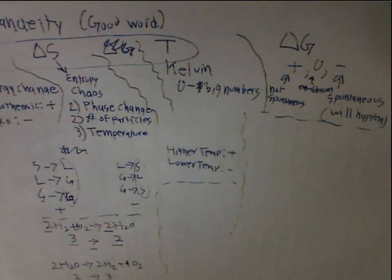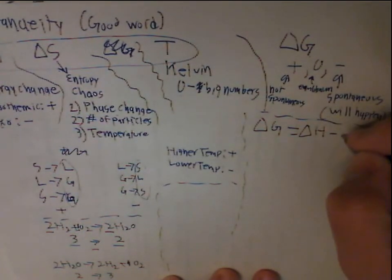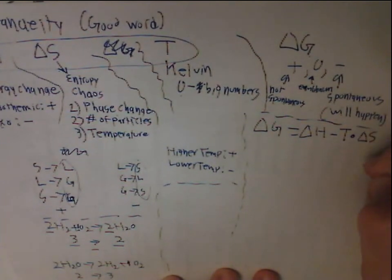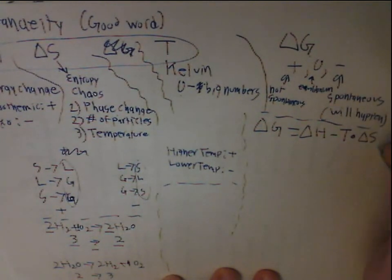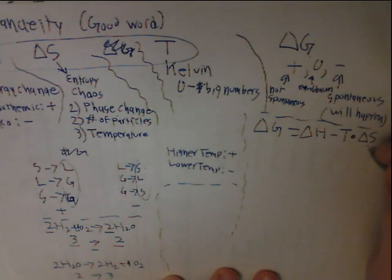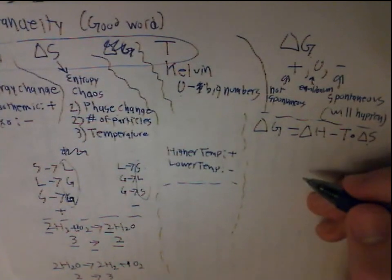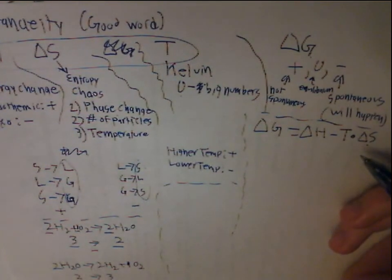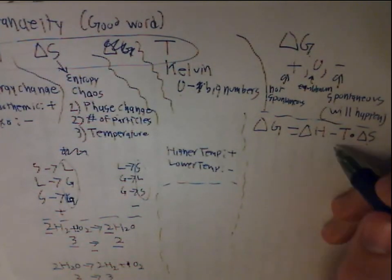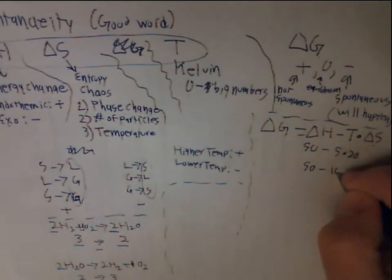The important equation to know is: delta G = delta H minus T times delta S. Normally you'll get numbers to plug in — for example, if you have 50, 5, and 20: 50 minus (5 times 20) equals 50 minus 100, which is negative, meaning the reaction will happen.